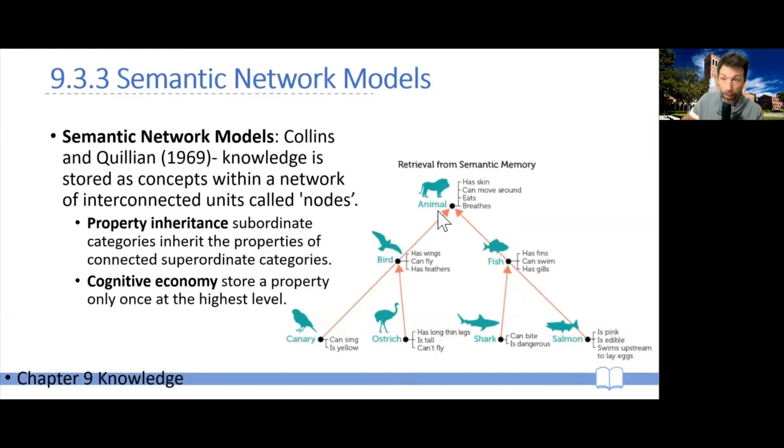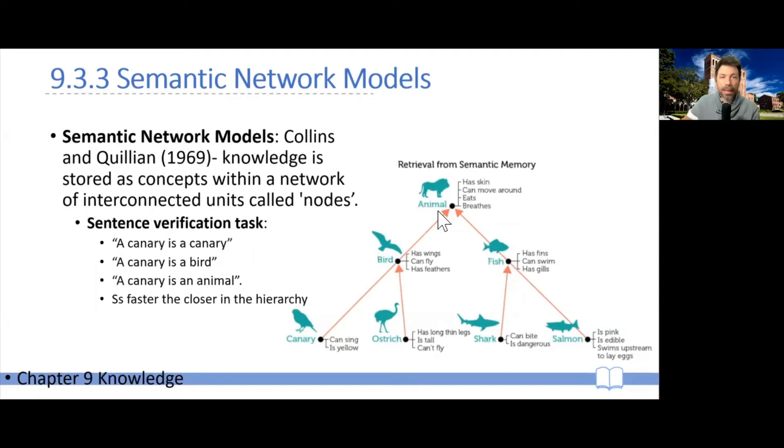And that's exactly what Collins and Quillian did to test their model. And for example, participants had to verify these sentences as quickly as they could. A canary is a canary or a canary is a bird or a canary is an animal. And indeed, as the model predicts, participants were faster at responding to canary is a bird compared to canary is an animal. Again, based on the idea, the closer they are in the network, the faster you would be to verify that property because you would mentally go inside this network and sort of track the things. And in order to verify that canary is a bird, you only have to take one step, whereas to verify canary is an animal, you'd have to take a couple of steps.